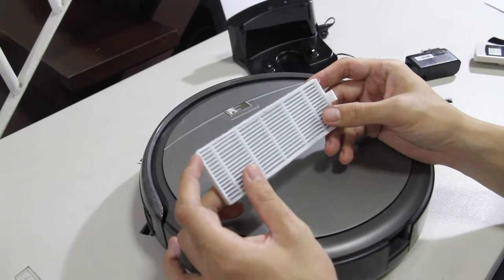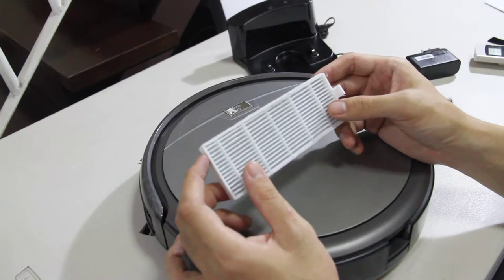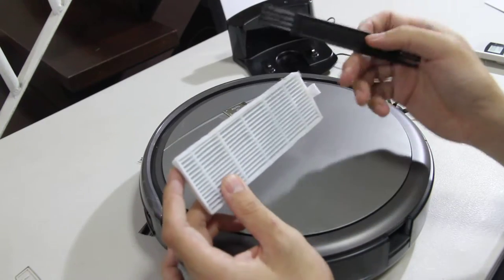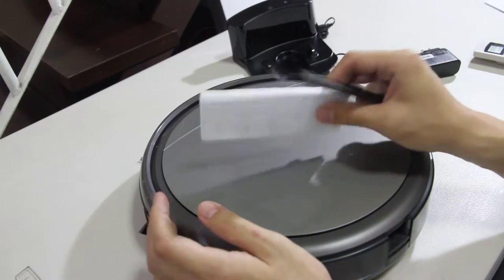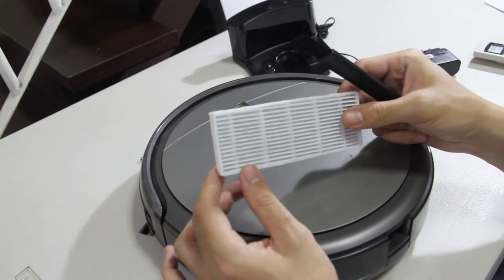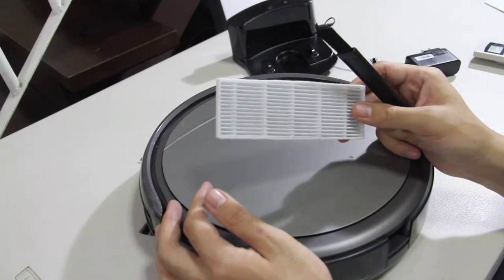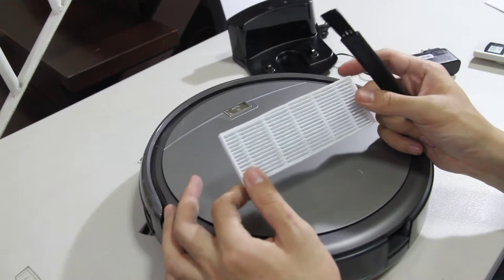You can only use the cleaning brush to clean any excess debris, and you can tap it to loosen up the dirt. And you may have to replace this once every three to six months depending on how often you use this.